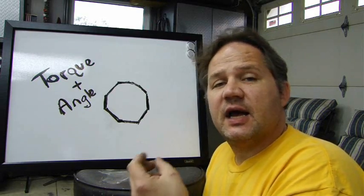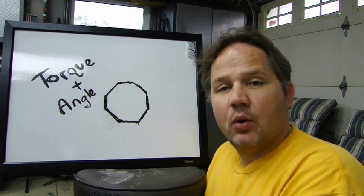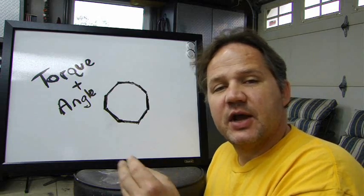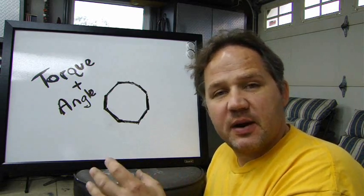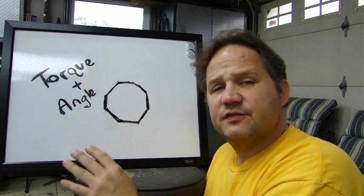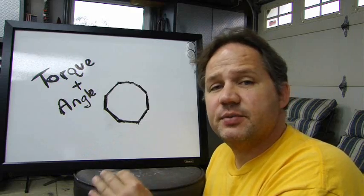It's also based on thread engagement, the area of thread engagement. For example, a 1/4-20 bolt is going to have less area of thread engagement than a 1/4-28 fastener. So that's part of it. And there are a lot of other physics involved in that. I'm not going to get into that because it's extremely calculated, but I can make it very simple to understand.